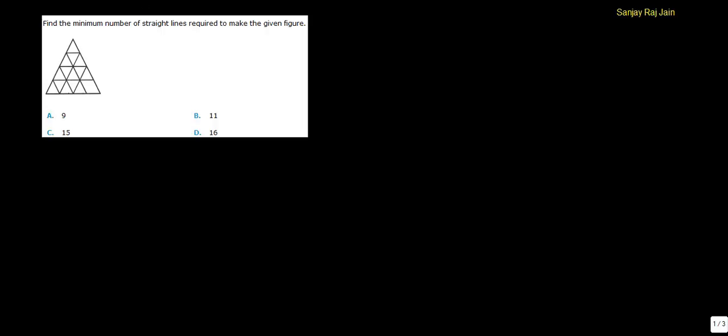In this question, find the minimum number of straight lines required to make the given figure. So we need to find the total number of straight lines that are required, and these have to be minimum number of straight lines. Like these two lines are not two straight lines, this is one straight line. Okay, so let's count the number of straight lines.